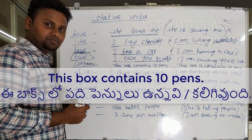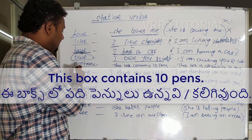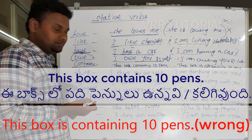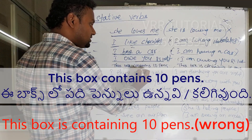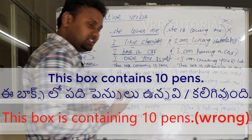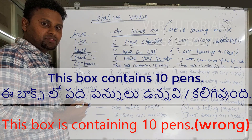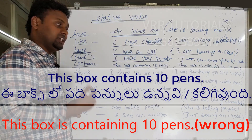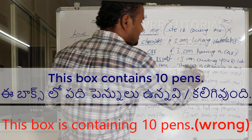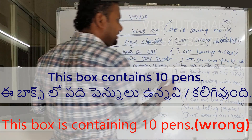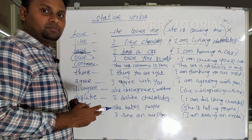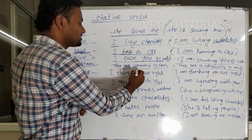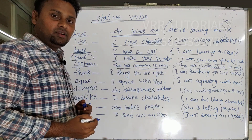Next: 'contain.' Contain is also a stative verb. For example: this box contains ten pens. We cannot say 'this box is containing ten pens' — that is incorrect. The correct sentence is: this box contains ten pens.